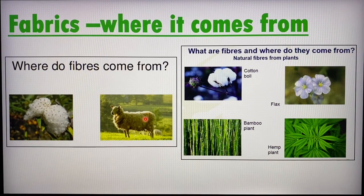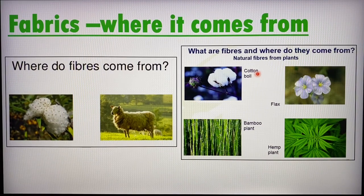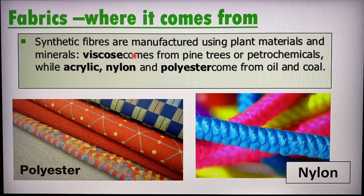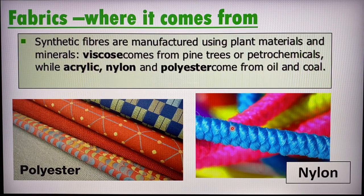If they come from animals, it's usually from silkworms or sheep or lambs. If they are from plants, we have cotton, flax, bamboo, and hemp. The third way is synthetic or man-made fibers or fabrics, made from a combination of naturally occurring fabric from trees or plants mixed with oil or petrochemicals. Two examples of synthetic fabric are polyester and nylon.